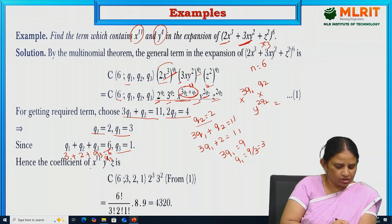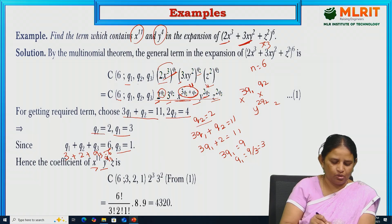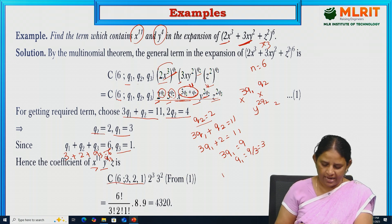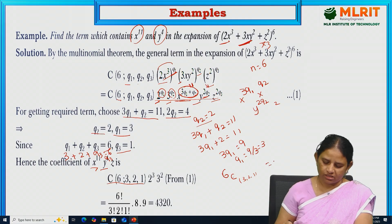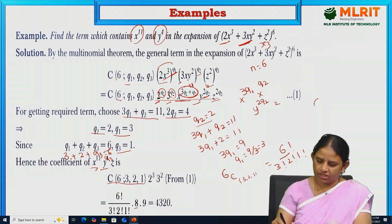Substituting q1 = 3, q2 = 2, q3 = 1 into the formula: C(6; 3, 2, 1) · 2³ · 3² = 6! / (3! · 2! · 1!) · 8 · 9. Simplifying: (6 × 5 × 4) / (2 × 1) · 72 = 60 · 72, giving the required coefficient for the term containing x¹¹y⁴.